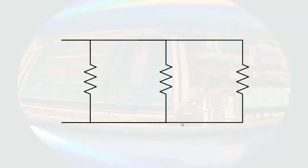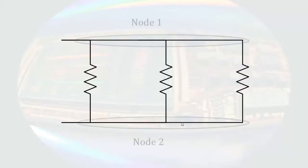If we increase the number of resistors between these nodes to three, since there are still only two nodes, we still have one voltage. That means all three resistors share two nodes and have the same voltage across them, so all three resistors are in parallel.